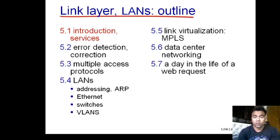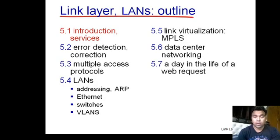Hello everyone, welcome to the course of Computer Networks Part 2. Today we are going to start Unit 2, which covers the complete Data Link Layer. The Data Link Layer is used for transferring a frame from the current node to the next node with the help of MAC addresses, which are 48-bit long addresses, also called physical addresses, hard-coded on your network interface card.